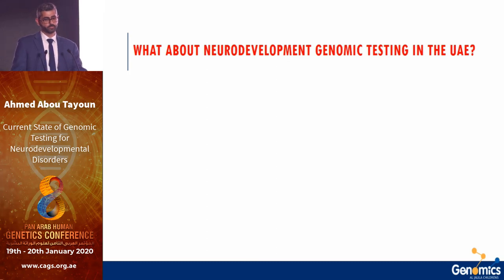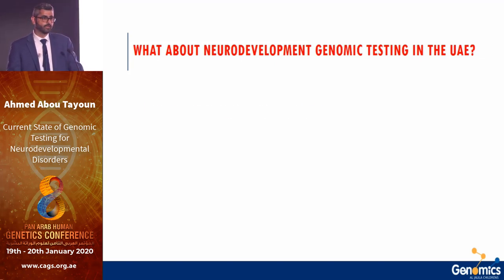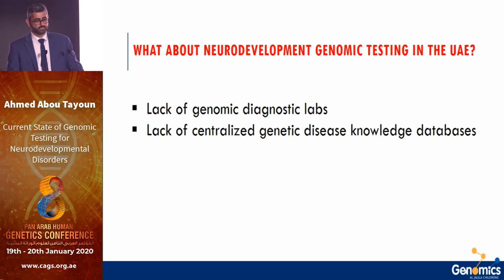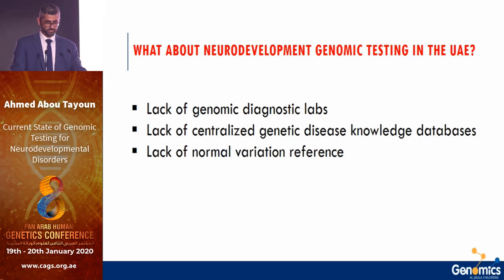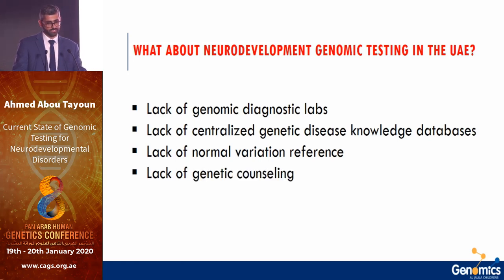Regarding neurodevelopmental genomic testing in the UAE, there is a lack of genomic diagnostics labs, a lack of centralized genetic disease knowledge databases — centers that see patients, genotype and phenotype them, and build rich databases — a lack of normal variation reference datasets for local populations, and a severe shortage of genetic counseling.